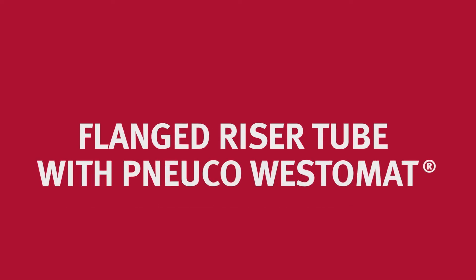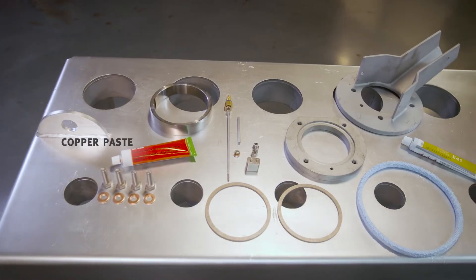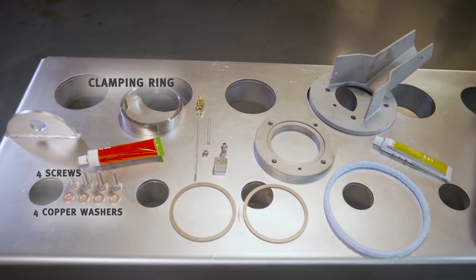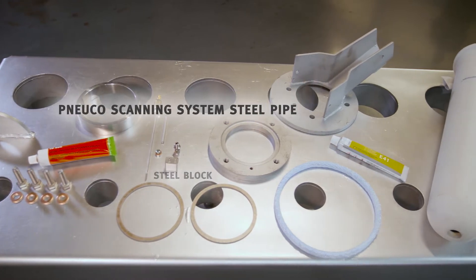In this video, we will show you how to install the flanged riser tube with NUCO and subsequently insert it into the Westomat. For the installation, you need the following individual parts.